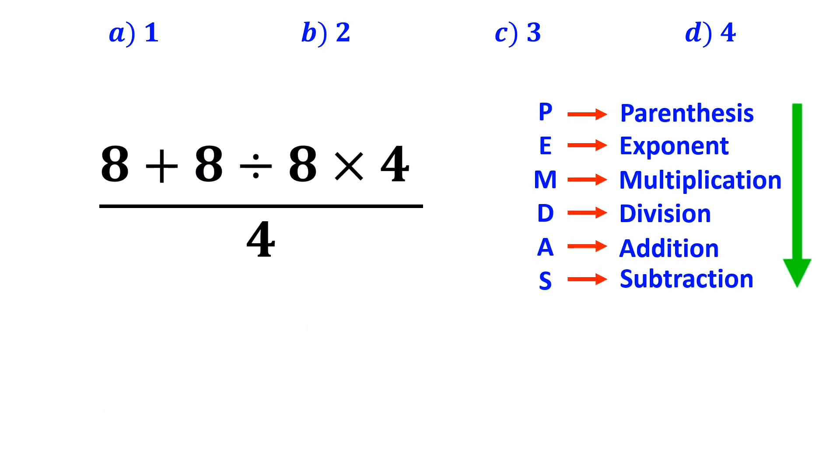It means that we need to carry out all the operations from top to bottom in order. As you can see in the image, in the numerator of this fraction, we have an addition sign, then a division, and then a multiplication.